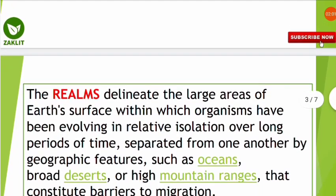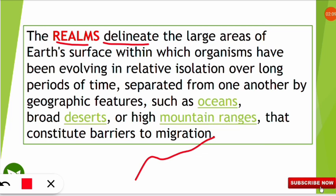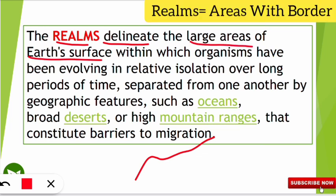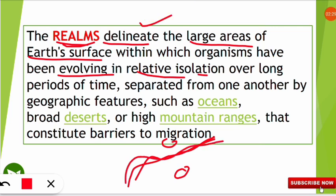These realms delineate — that means demarcate — large areas of the earth's surface. The geographical lines called biogeographical realms divide one geography from another, in which organisms have been evolving in relative isolation. These boundaries are the factor by which organisms on one side differ from those on the other in the evolutionary process.